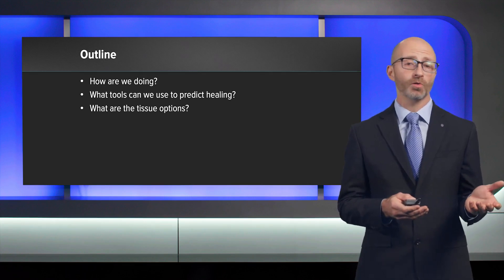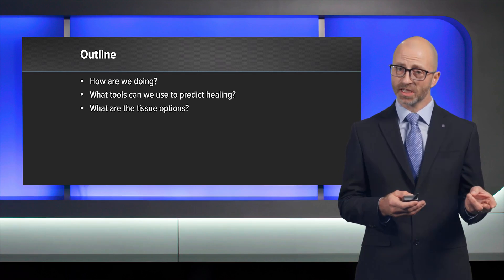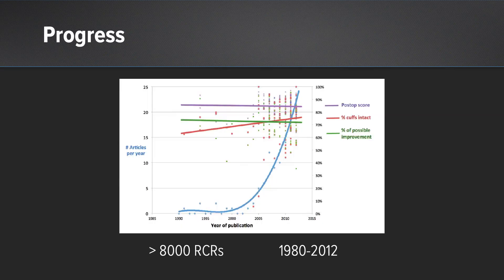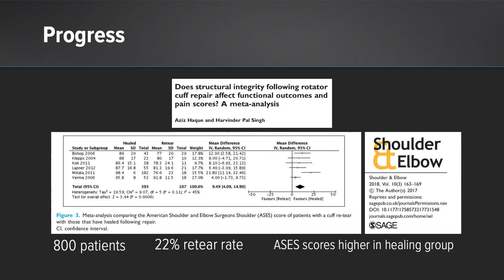So first of all, how are we doing overall with rotator cuff tears? Over the last several decades we've had a dramatic explosion in the number of rotator cuff repair articles published, and we've gotten better with healing — as you can see moving left to right in that red line — but we still have a lot of room to improve. We still have about 25% of patients not achieving healing with good rotator cuff repairs, and that's important because functional outcome is correlated with rotator cuff integrity. A meta-analysis of 800 patients found 22% re-tear rate, with ASES scores higher in patients who healed.